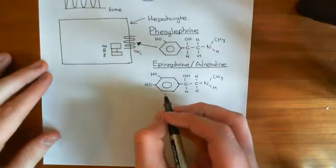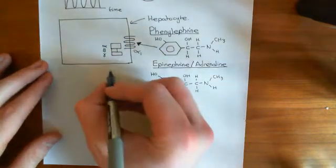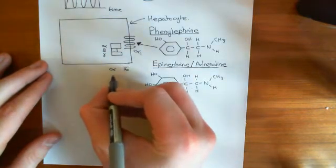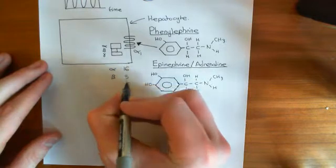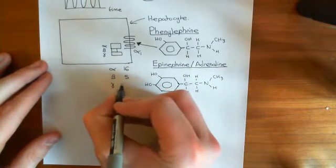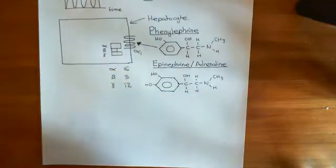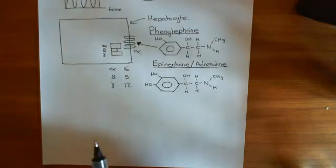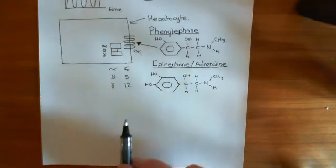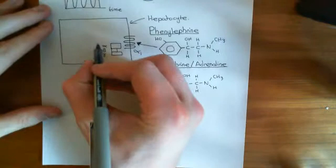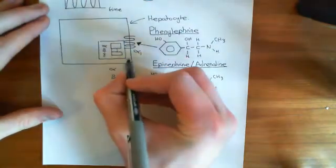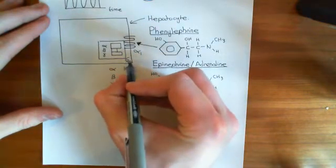You can make a huge number of heterotrimeric G-proteins because there are 16 different genes which code for alpha subunits, five different genes which code for beta subunits, and 12 different genes which code for gamma subunits. The alpha-1 receptor is specifically coupled to GQ G-proteins.